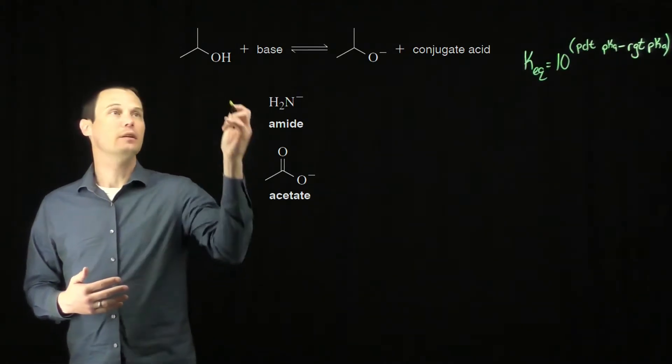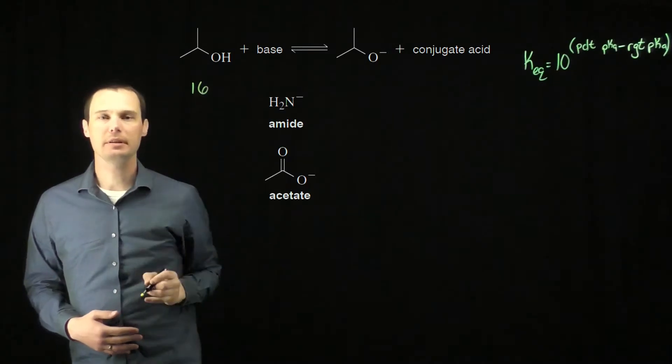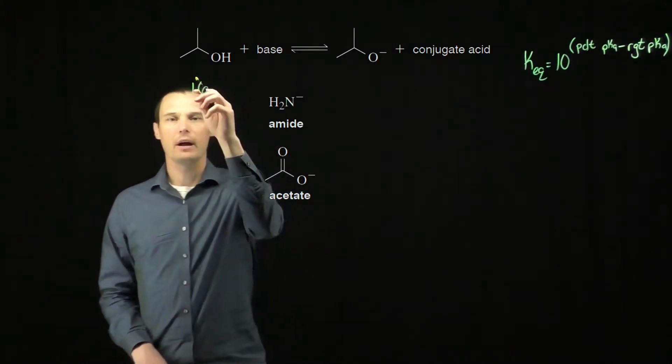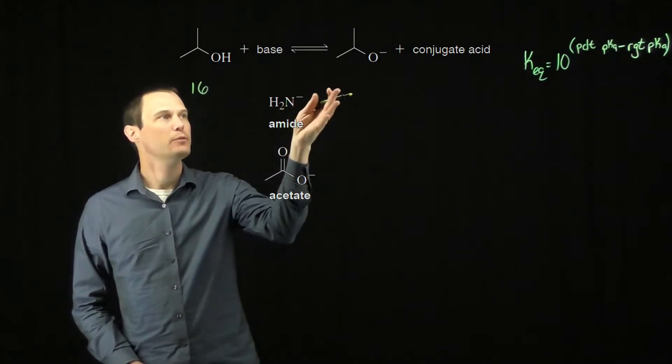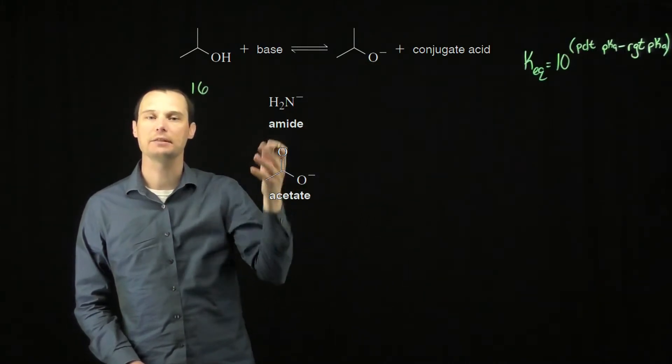So let's take a look. The pKa of the starting alcohol is approximately 16. The alcohol will react with one of these two bases to form the alkoxide and the conjugate acid of the base.